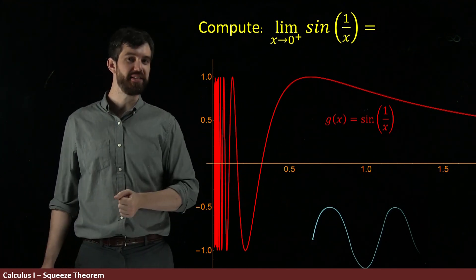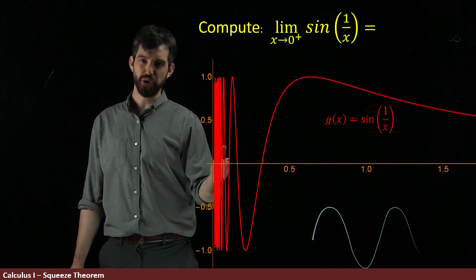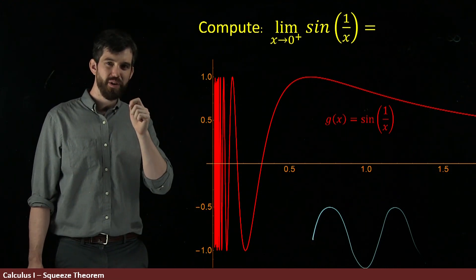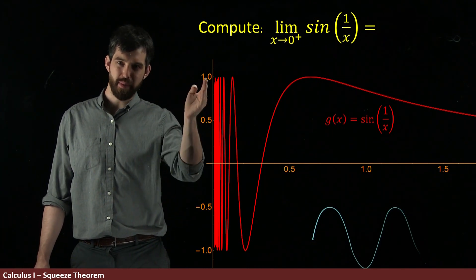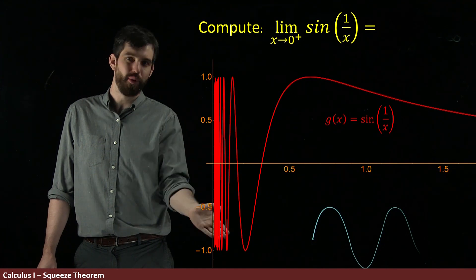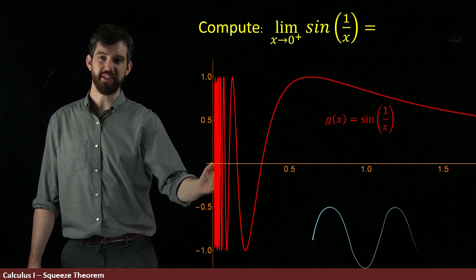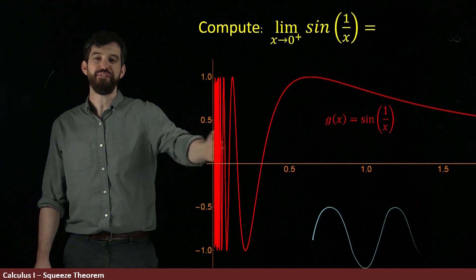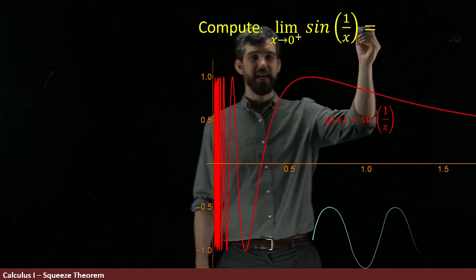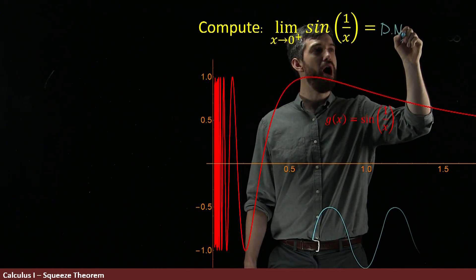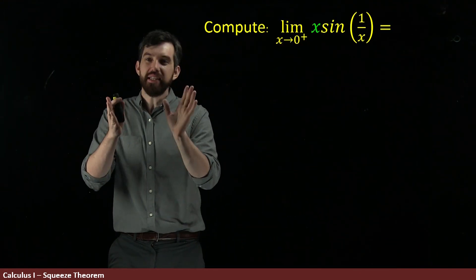Now that we have what the graph looks like, what is the limit as we go right to zero, coming from the right? Well, we never approach any one value. If I'm around zero, sometimes I'm up at one, sometimes I'm down at minus one, sometimes I'm somewhere in the middle. There's no single value that this approaches as we get closer to zero from the right — it just oscillates infinitely fast. So this limit does not exist, or DNE.